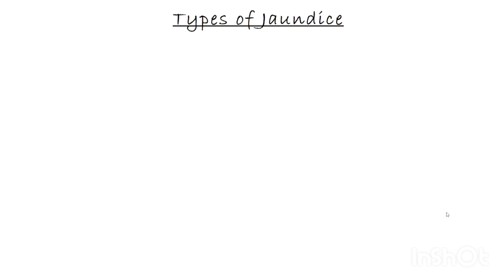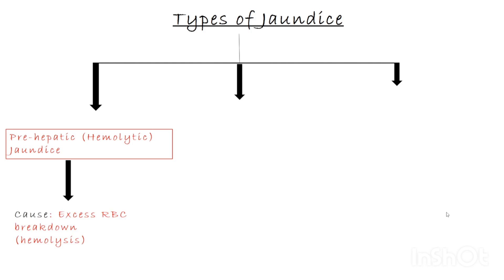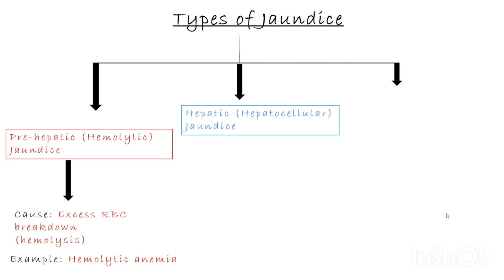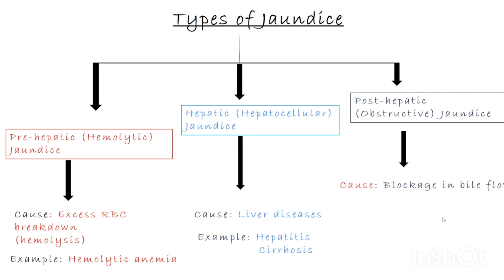Types of jaundice. There are mainly three types. Pre-hepatic or hemolytic jaundice causes excess RBC breakdown, for example hemolytic anemia. The second type, hepatic or hepatocellular jaundice, is caused by liver disease — hepatitis and cirrhosis are examples. Post-hepatic or obstructive jaundice causes blockage in bile flow, for example gallstones and tumors. Another type is neonatal jaundice, which can be physiological in newborns.